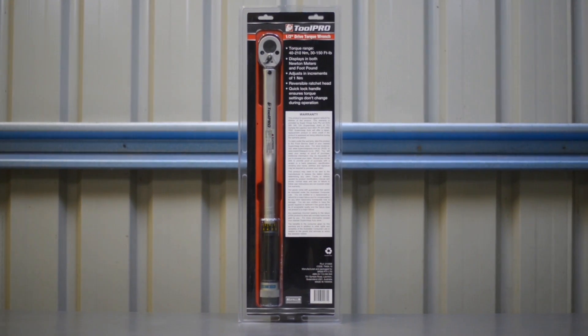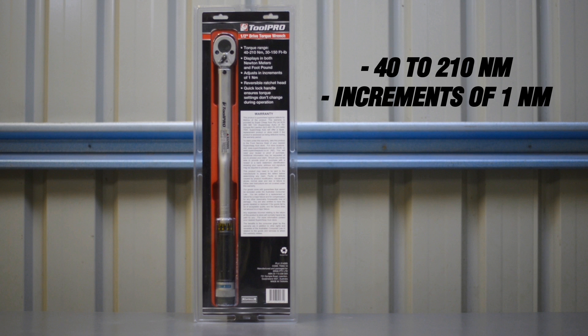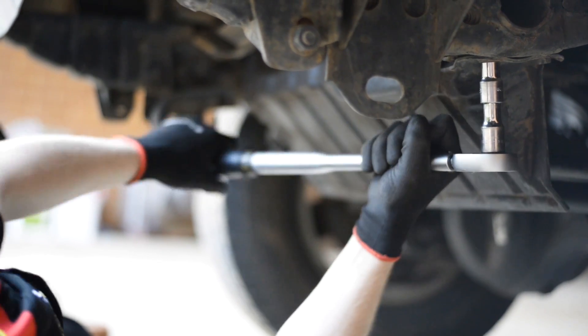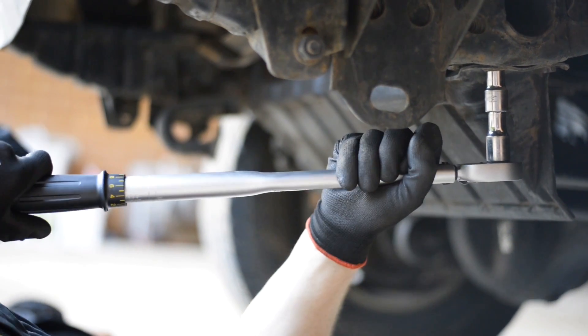The half-inch drive torque wrench has a range of torque settings from 40 to 210 Nm, adjustable in increments of 1 Nm. This makes it ideal for wheel nuts and for most large fasteners throughout the chassis and driveline components of your vehicle.